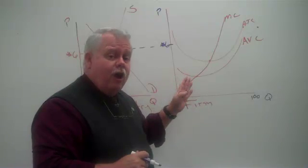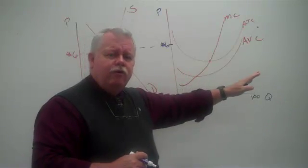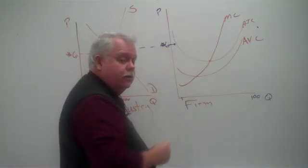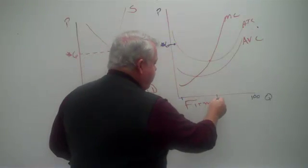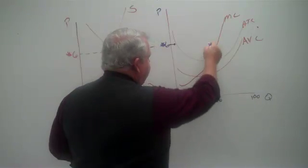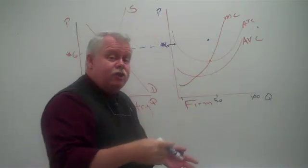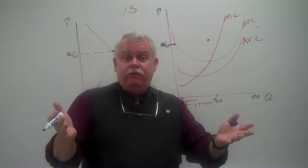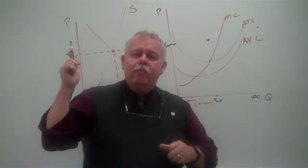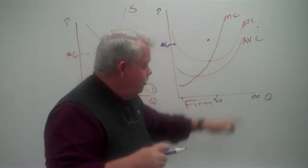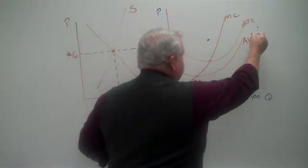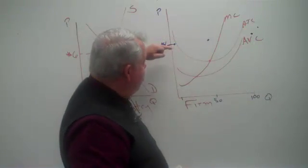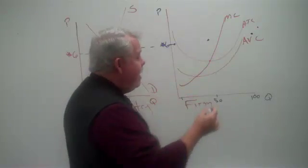And it's $6 for as many units as they want to sell. If they sell one unit, they get $6 for it. If they sell 50 units, they get $6 apiece. The price is constant. The price is given. We call the company a price taker. They take the price as a given. They don't decide the price. The market does. They can sell all 100 units for $6 apiece.